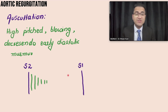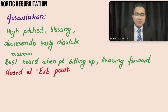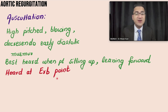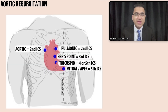The murmur is best heard when the patient is sitting up and leaning forward. It is best heard at the Erb's point — the third intercostal space.